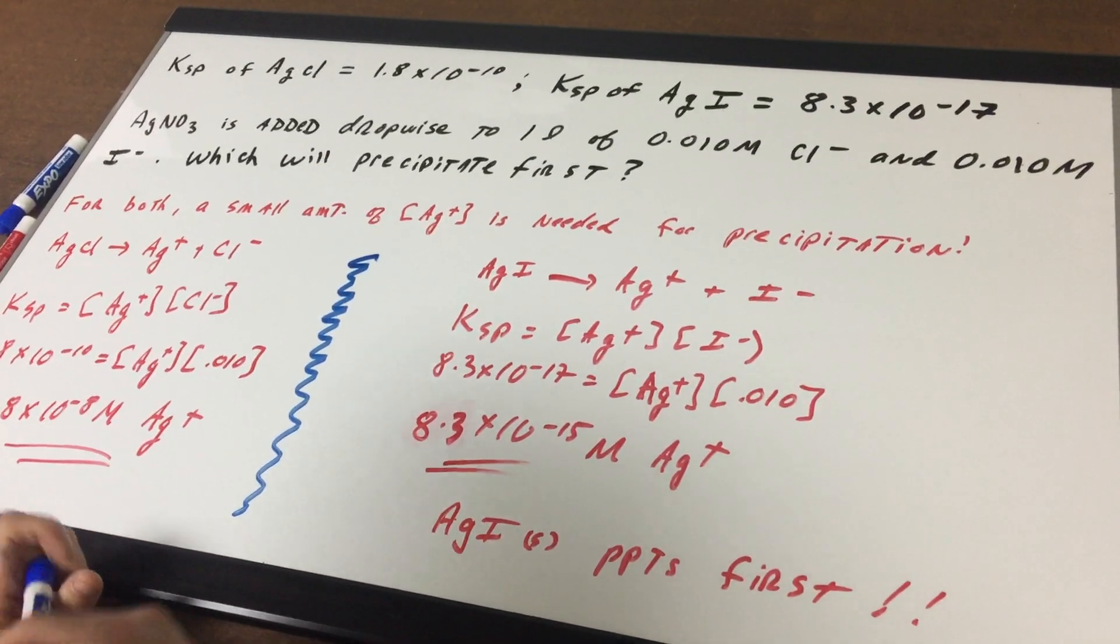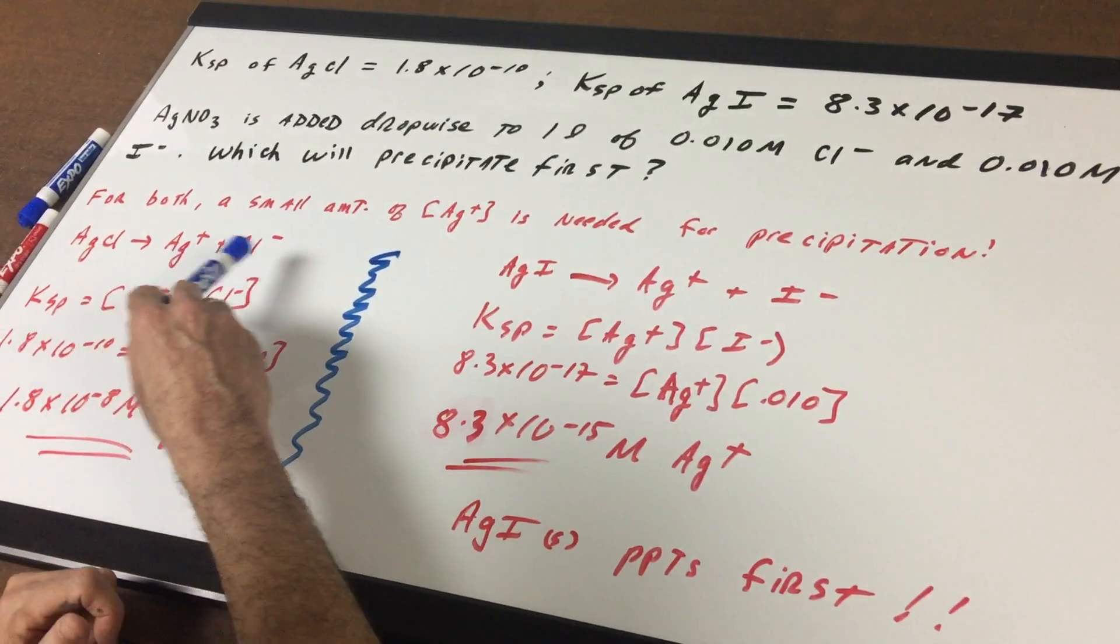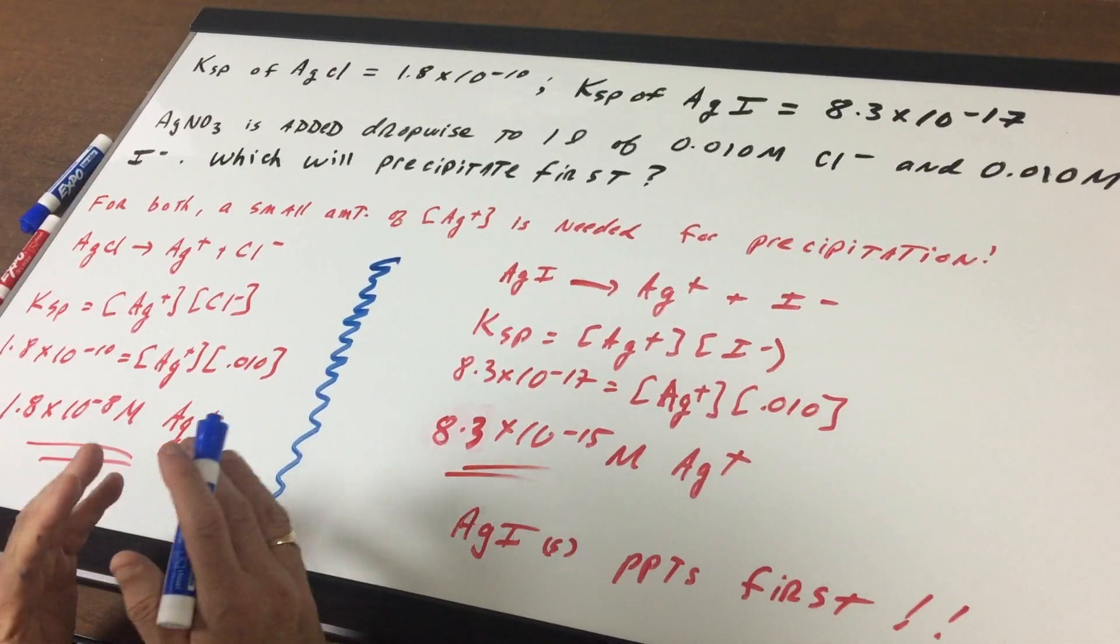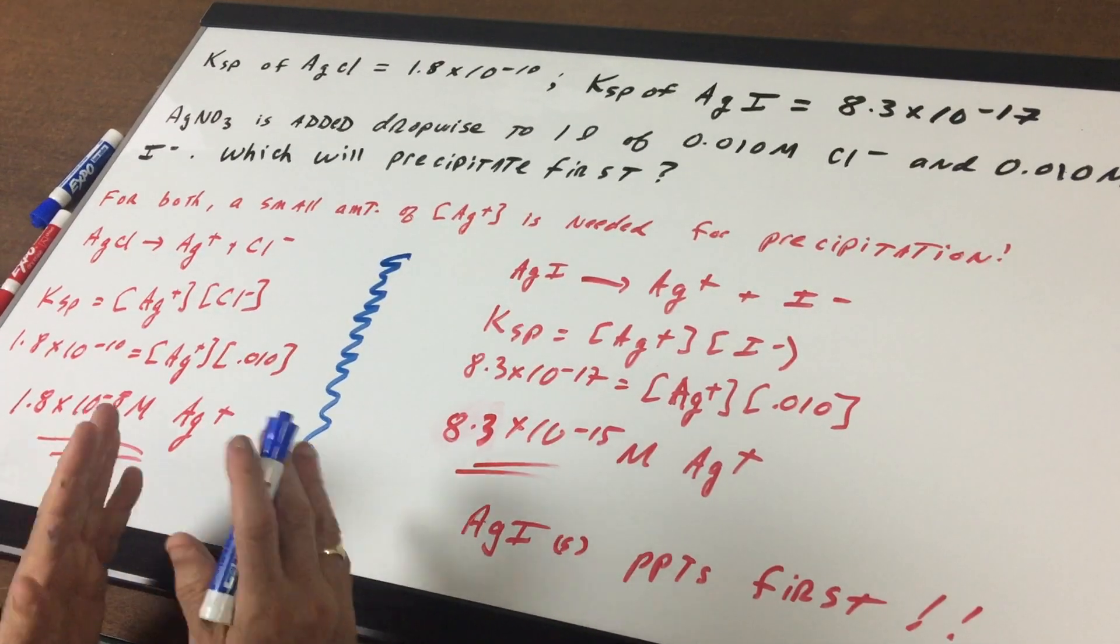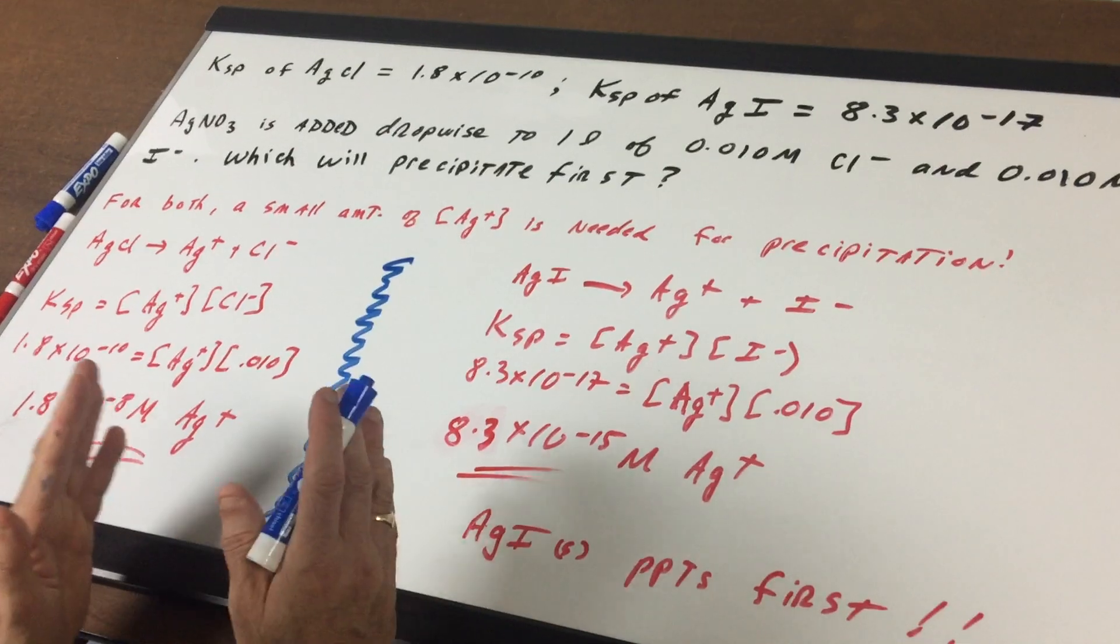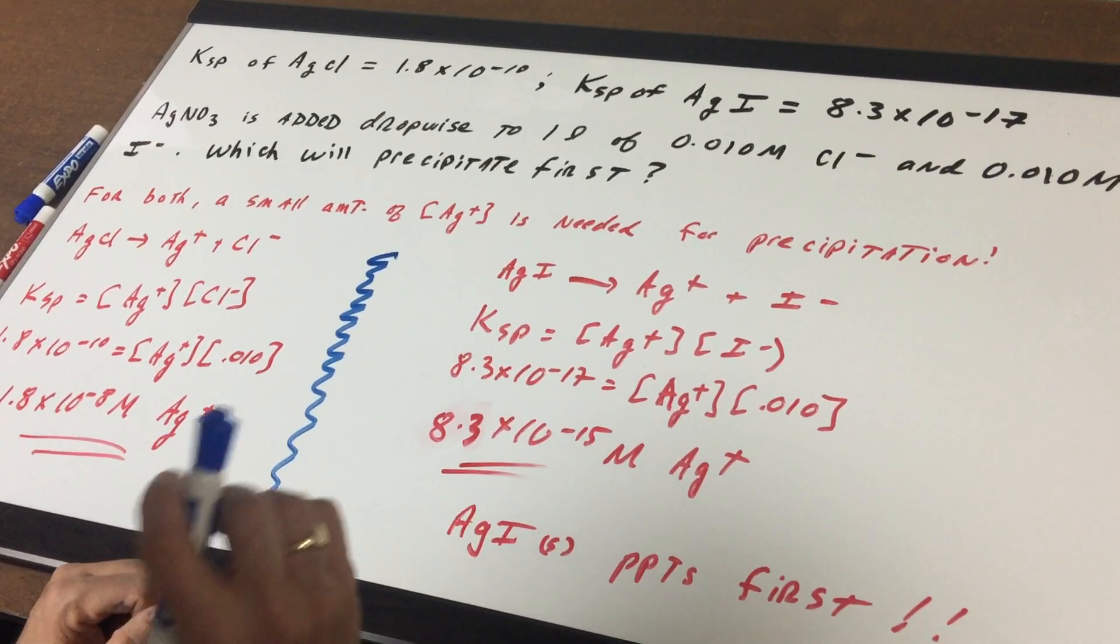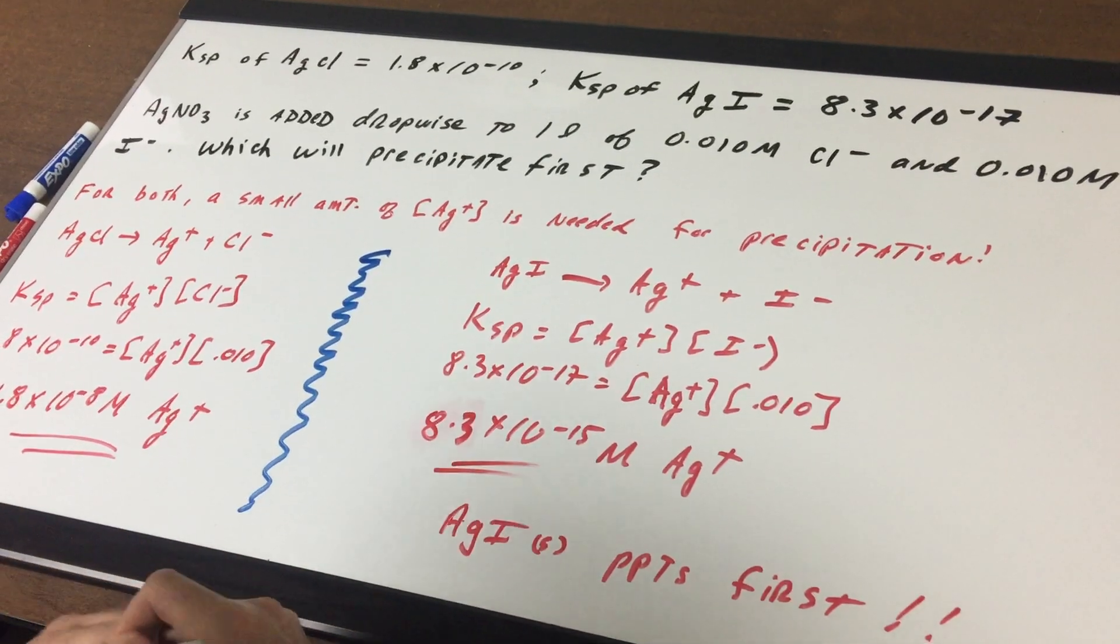First thing we're going to do is to understand for both of them a small amount of silver is needed to cause precipitation. So the idea is we need to find how much silver will get you totally saturated, and once we do that, that's the amount that we need to exceed before we get precipitation.